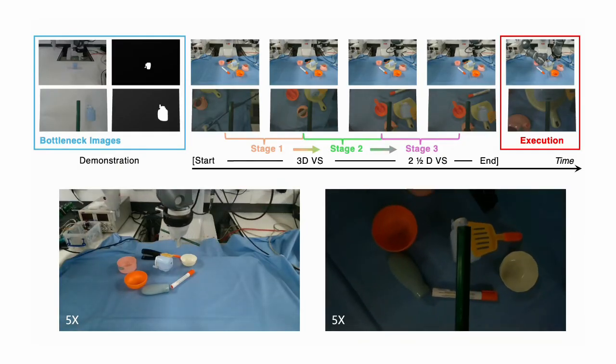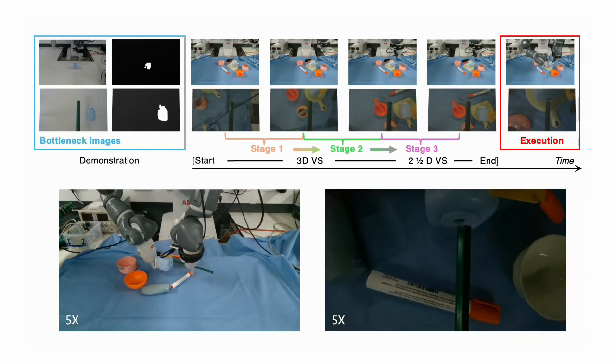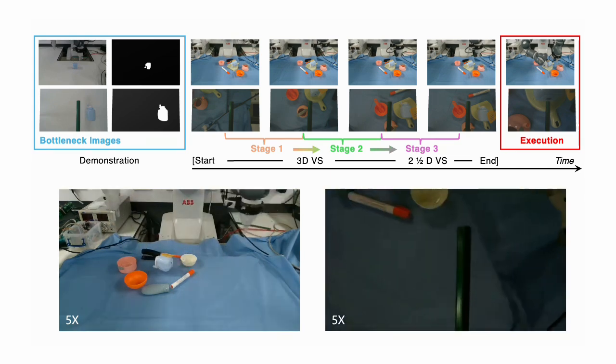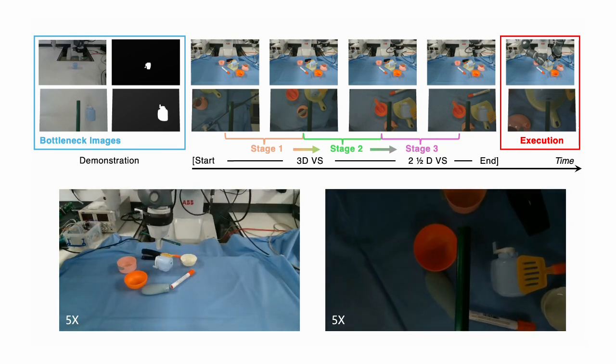During testing, given environmental changes, distracting objects, partial occlusions, and arbitrary initial positions, our 3-VS controller relocalizes the bottleneck pose and executes the coordinated trajectory to successfully complete the task.